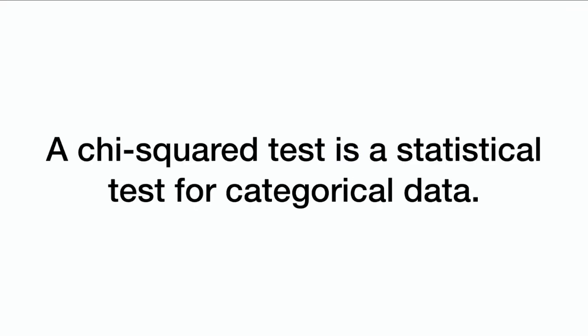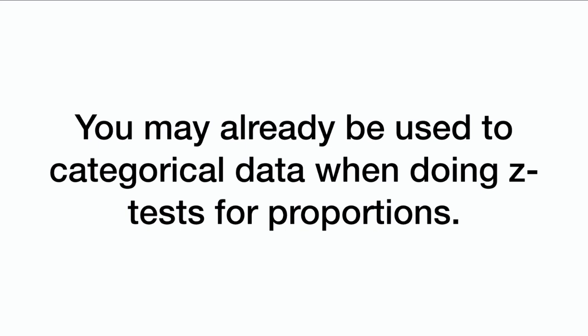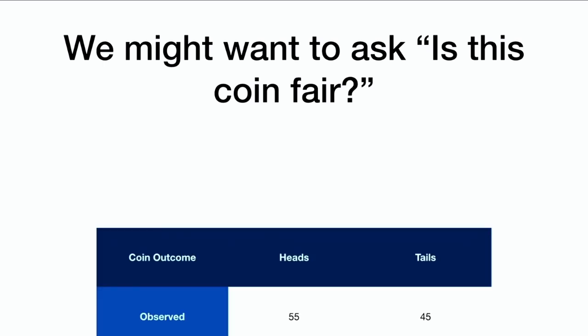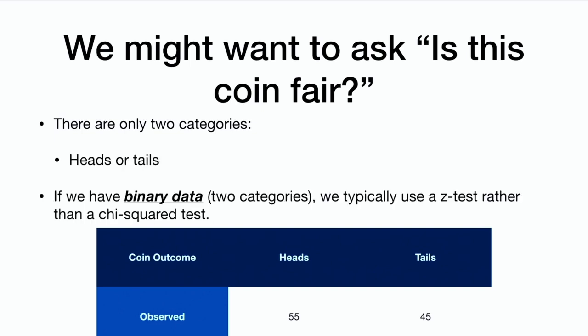A chi-squared test is a statistical test for categorical data. You may already be used to categorical data when doing z-tests for proportions. We might have seen questions like: is this coin fair? You see data where we flip a coin 100 times and get 55 heads and 45 tails. Here there are only two categories — we call this binary data. If we have binary data, we typically use a z-test rather than a chi-squared test.